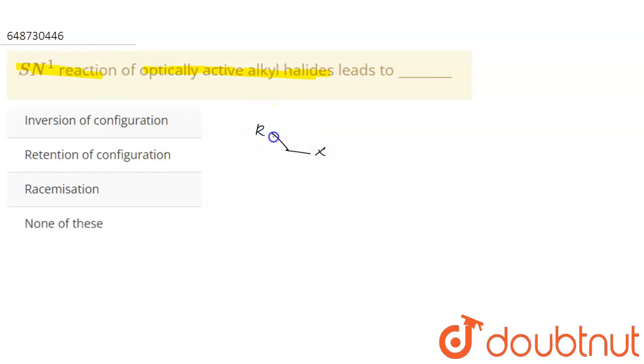So all these are different. Consider these three alkyl groups are different. So this carbon is optically active. This is R1, R2, R3 - I am just differentiating it.